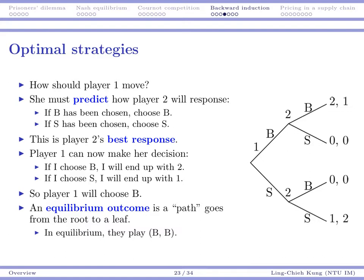So if player two is here, if player two has observed that player one chose B, player two will also choose B, right? Because one is greater than zero. But if player two has observed S, player two will choose S, because two is greater than zero. So now we can see B for B or S for S is player two's best response. Just like in a static game, in a dynamic game, we may also find a player's best response to the other players.